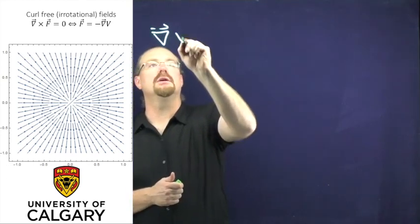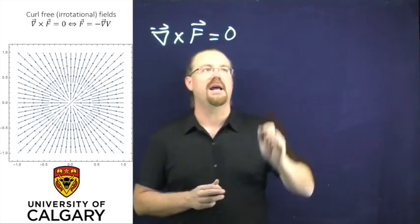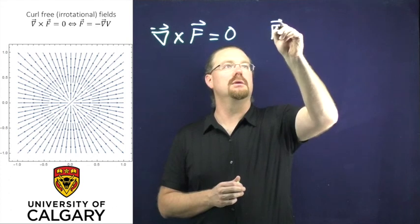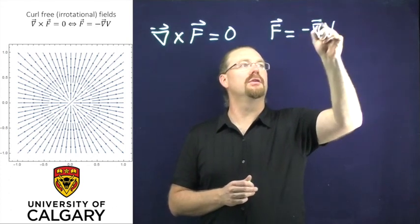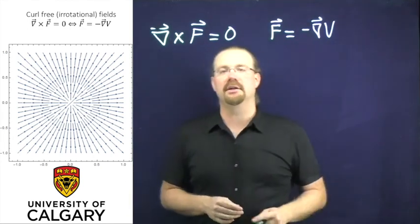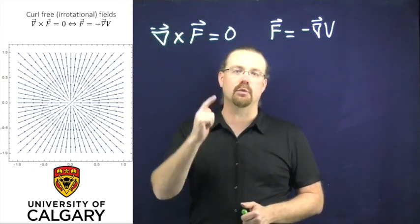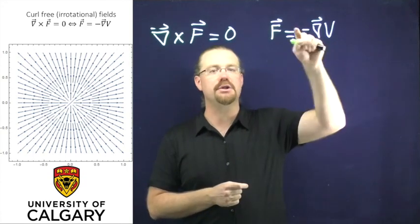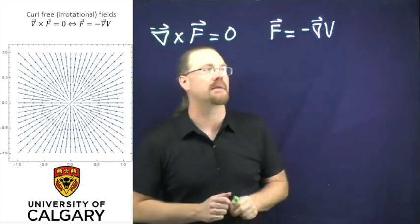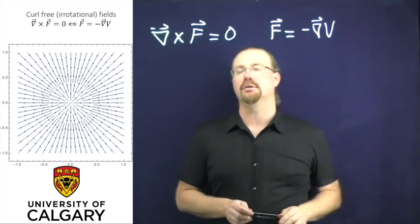We're going to focus for a second on fields that are curl-free. So if we make the statement that the curl of our vector field F is equal to zero, regardless of what F is, F can always be written as the gradient of some scalar field. Now in electricity and magnetism, we put a minus sign here — I promise you the minus sign will be a curse and a blessing. When you have a minus sign wrong in one of your homework problems, always check here first. So our vector field can be written as the minus gradient of our scalar field.